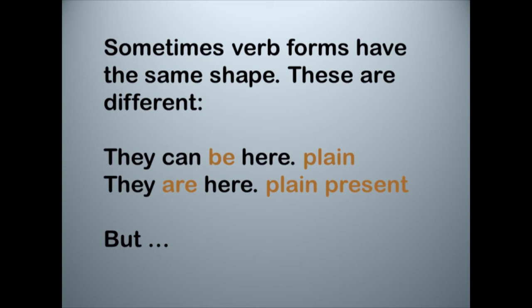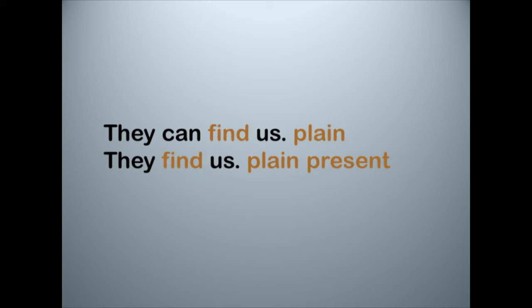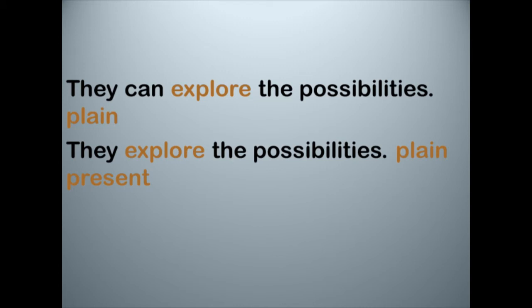Look at these forms, which are in fact different. 'They can be here' — be is the plain form. 'They are here' — are is the plain present form. For the verb be, the plain form and the plain present form have different shapes: be versus are. But this verb is exceptional. For almost every other verb in English, the plain form and the plain present form are identical — they have the same shape. Look at the verb go: 'They can go there' and 'They go there.' Go and go — same shape. Similarly, 'They can find us' and 'They find us' — find and find, two different forms of the same shape.